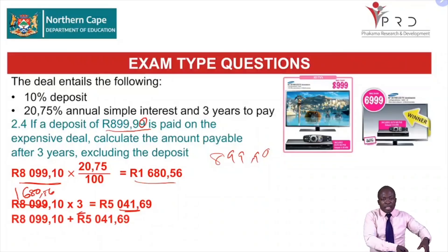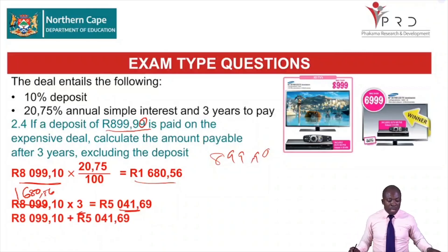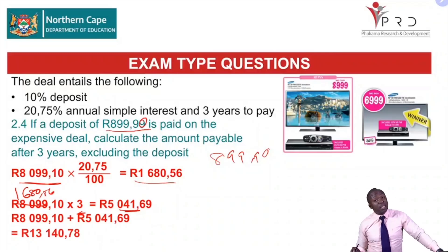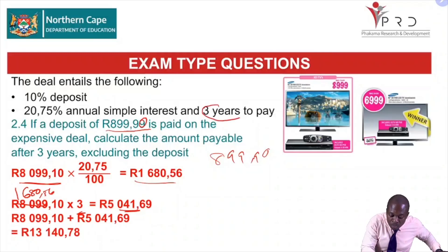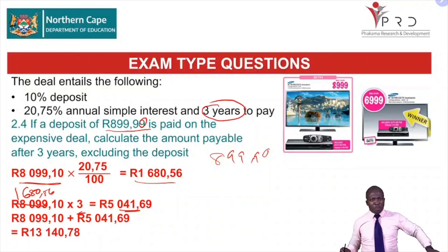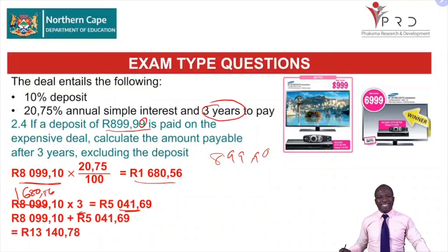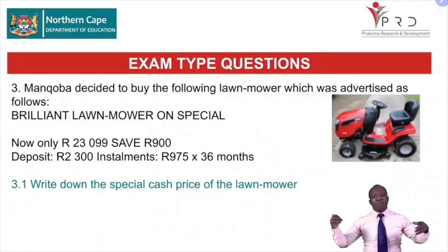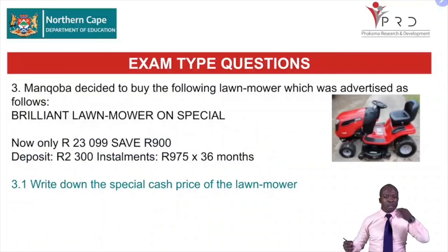We now owe them 13,140 rand 78 cents. We must pay it over three years, and we pay every month — not every year. To find the monthly installment, you divide by the number of months in three years, which is 36 months. But for this question, we just wanted the total amount payable.